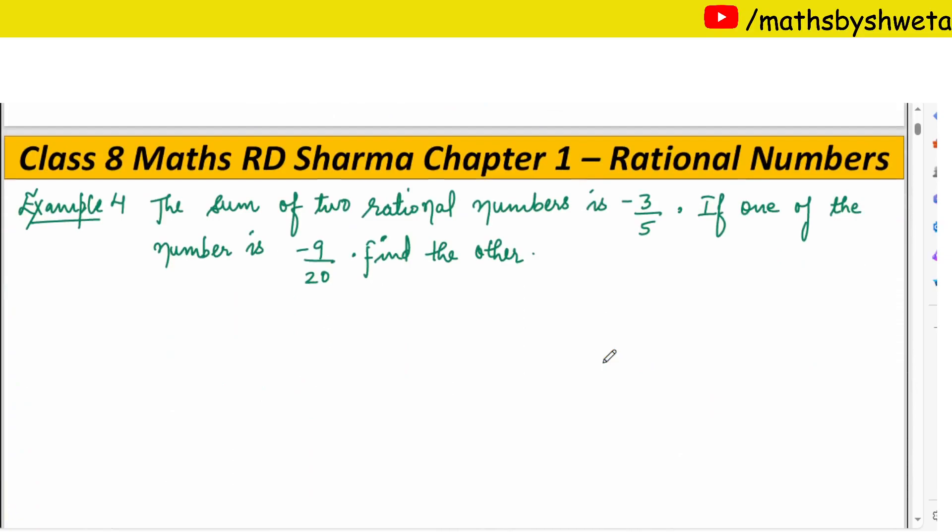Example 4: The sum of 2 rational numbers is minus 3 upon 5. If one of the numbers is minus 9 upon 20, find the other. If you have two rational numbers plus to the answer is minus 3 upon 5, but we have only one rational number.